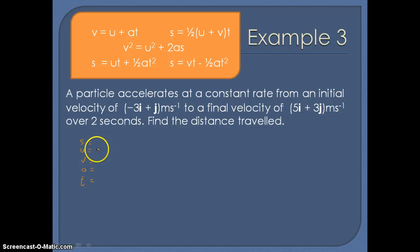So our initial velocity U was minus 3i plus j. Our final velocity V was 5i plus 3j. We don't know the acceleration and the time is 2. And to start us off we need to calculate the displacement. So we need to choose an equation. We can choose S equals one half of U plus V times T.